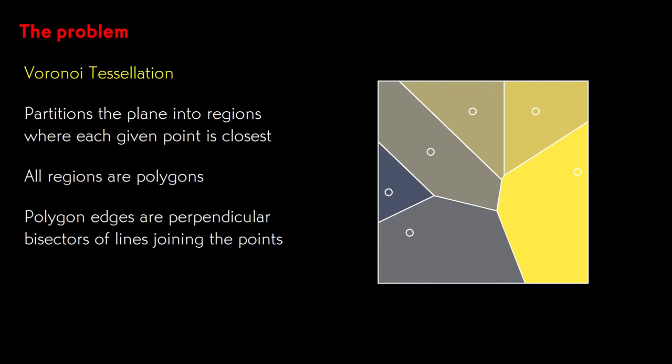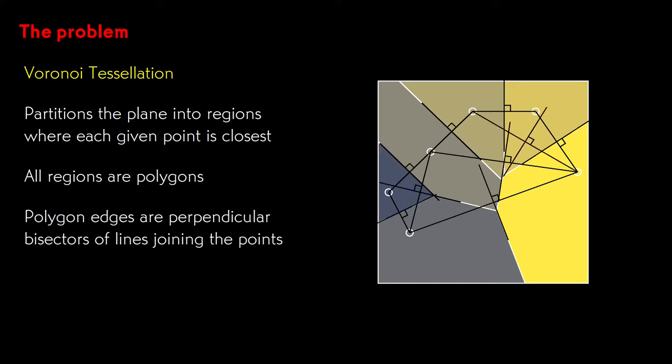Each of the edges of the polygons is equidistant between some pair of points of interest, which is to say that it is the perpendicular bisector of the line joining those points. The line joining the pair of points at lower right has a perpendicular bisector defining the edge between the corresponding regions. The line joining the points at upper right again has a perpendicular bisector separating the regions, and so on through the entire diagram. The fact that the dividing line is a perpendicular bisector will be important in the computation.